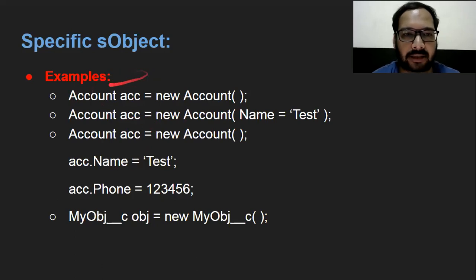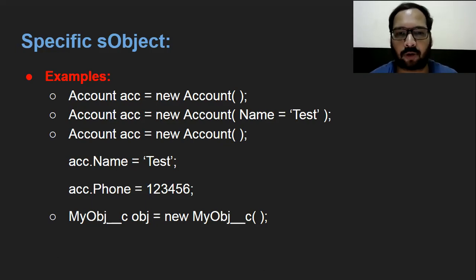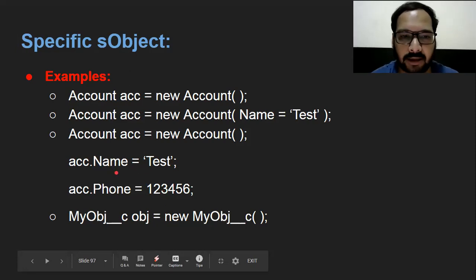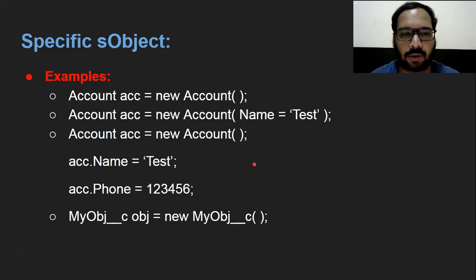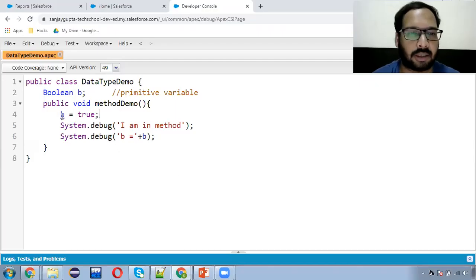Now comes SObject. SObject is very important in Salesforce because whatever we create stores under a particular object — we create records which are directly associated with objects. We have two types: standard and custom. Standard object variable creation is shown in the first line, and custom object variable creation in the last line. To assign values to fields, you can use two notations: inside parentheses with the field name and value directly, or using dot notation like acc.fieldName = value.